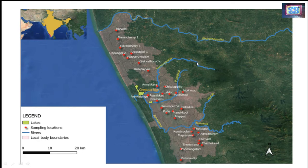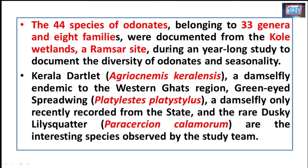The study was conducted in the Kol wetland area. You can see the location of that Kol wetland area in India, with green marks indicating lakes, red marks showing the sampling locations, blue ones representing rivers, and pink or purple marks indicating the local boundaries of that particular area. In this study, 44 species of Odonates were found, belonging to 33 genera and 8 families, reported in the Kol wetland area.